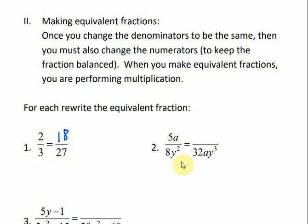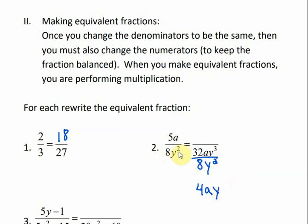I could also take 27 and divide it by 3 — 27 divided by 3 is 9 — and then multiply the numerator times 9 to get 18. So let's do it that way for number 2. I'm going to take the bigger denominator and divide it by the smaller one. If I divide by 8y squared, 8 will go into 32 four times. If I divide the numerator by the denominator, I would still have an a left. And for our like variables, we subtract exponents — y to the third minus y squared gives me a y. So if I multiply 8y squared times 4ay, that would give me 32ay to the third. So I need to multiply the numerator 5a times 4ay, and that gives me 20a squared y. These are equivalent fractions.